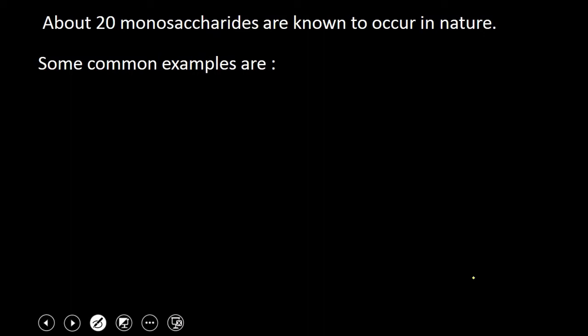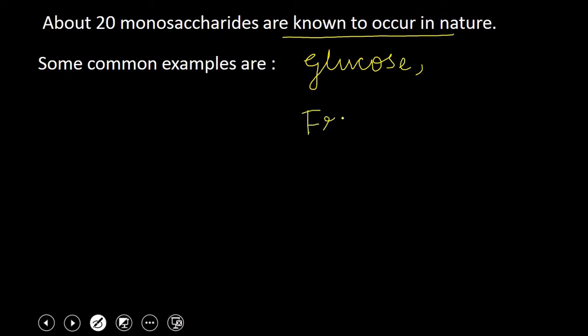About 20 monosaccharides are known in nature. Some common examples are glucose, fructose, and ribose. So we have around 20 monosaccharides in nature, with glucose, fructose, and ribose being common examples.